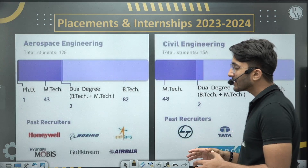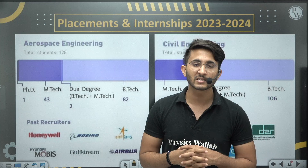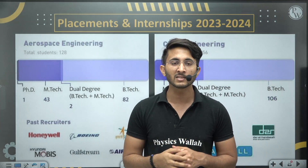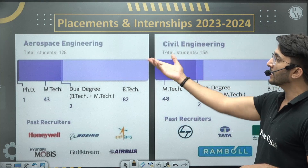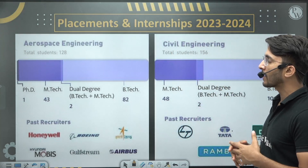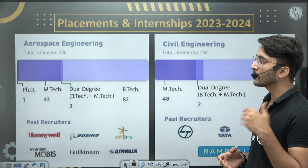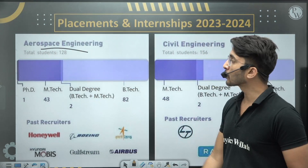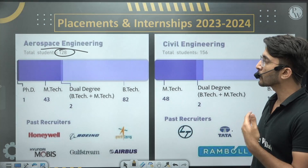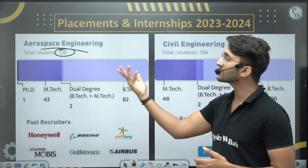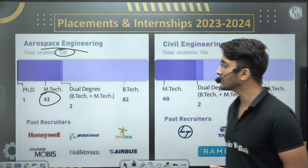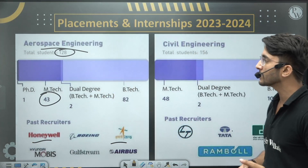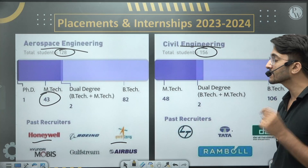Placement stats are a key indicator when choosing an IIT. For Aerospace Engineering, 120 total students were placed, of which 43 are M.Tech students. Major recruiters include Honeywell, ISRO, and Boeing. For Civil Engineering, 156 total students were placed, of which 48 are M.Tech students, with recruiters like L&T and Tata.